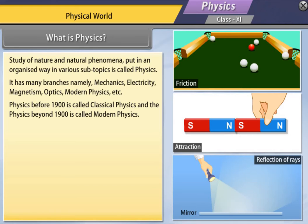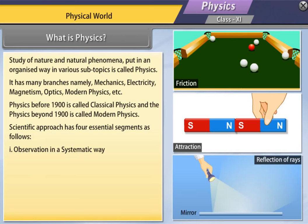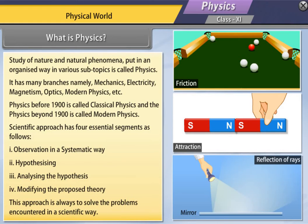Scientific approach has four essential segments as follows: Number 1, observation in a systematic way. Number 2, hypothesizing. Number 3, analyzing the hypothesis. Number 4, modifying the proposed theory. This approach is always to solve the problems encountered in a scientific way.